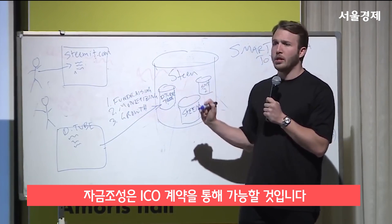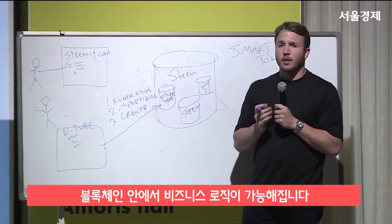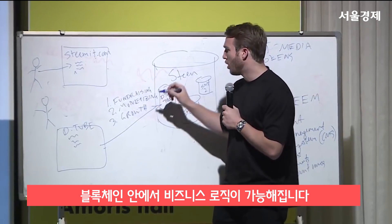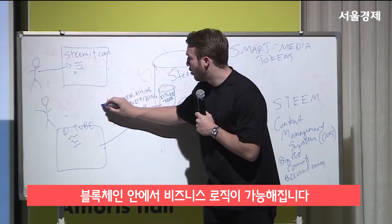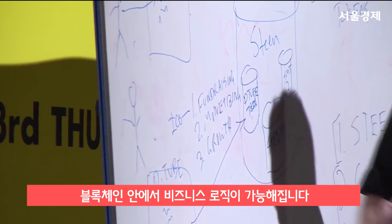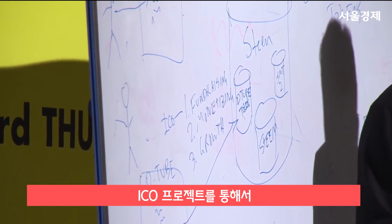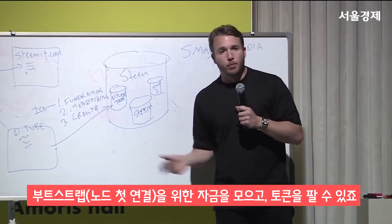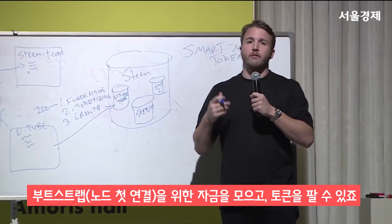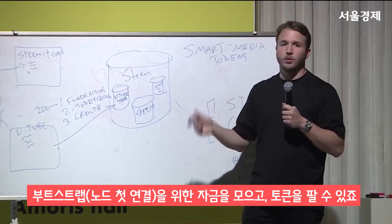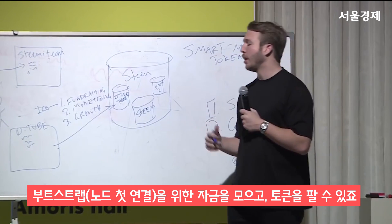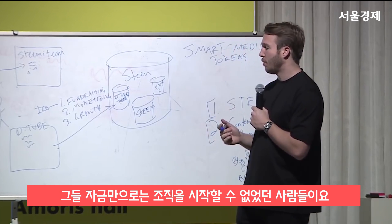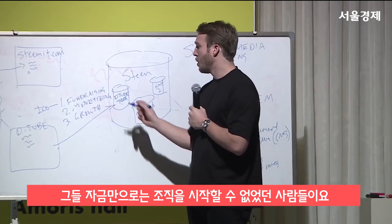First, fundraising is through an ICO contract. Basically, when you launch a token, there is business logic available in the blockchain that will allow you to set up an ICO. And through an ICO, a project could raise money to become bootstrapped, or they could feel that they're selling their token because there's so much demand for it, and could kickstart their organization with those funds.